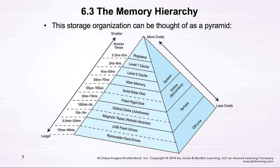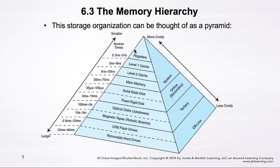Here is the graphical representation of the memory hierarchy. In this storage organization, we can think of it as a pyramid. At the bottom of the pyramid we have the larger capacity storage space with less cost. As we go to the top of the pyramid, we have a smaller storage space that is more costly, however the speed is much faster.